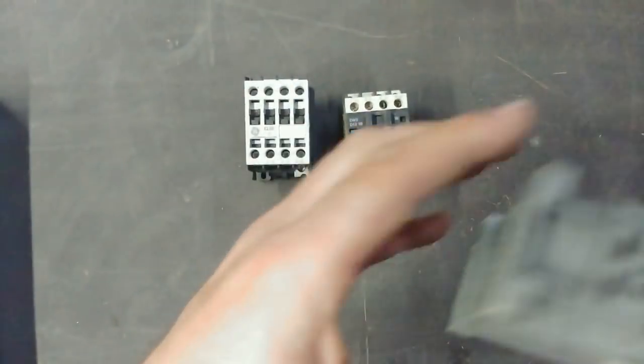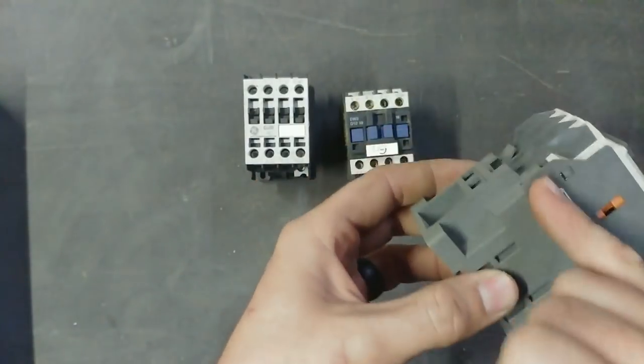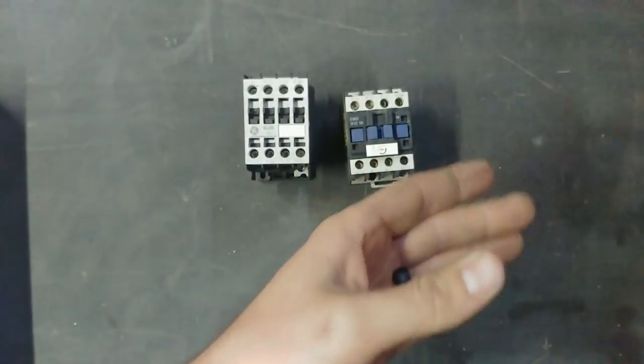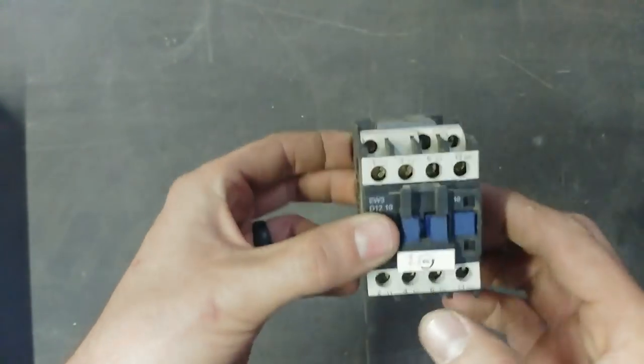Now this one is missing the coil because it burned out. So you can actually change just the coil if the contactor burns. I'm going to connect up a contactor here and show you which wire goes where.